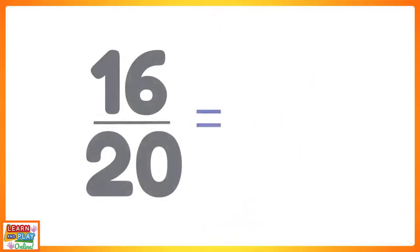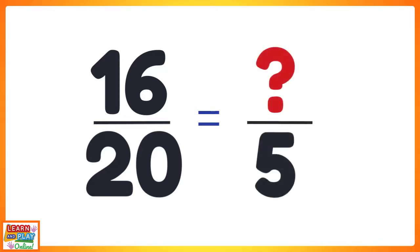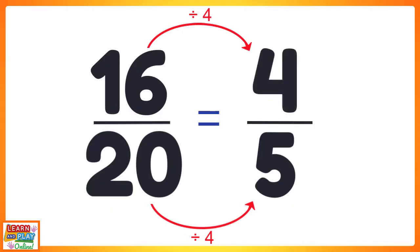Let's do another question together. Here we have sixteen over twenty. We need to find the equivalent fraction that has a denominator of five. Since we've already been given the denominator, let's analyze the relationship between them. To get from the number twenty to the number five, we had to divide twenty by four. If that's what we did to the bottom, we must do the same to the top. So sixteen divided by four equals four. We have found that an equivalent fraction to sixteen over twenty is four fifths.